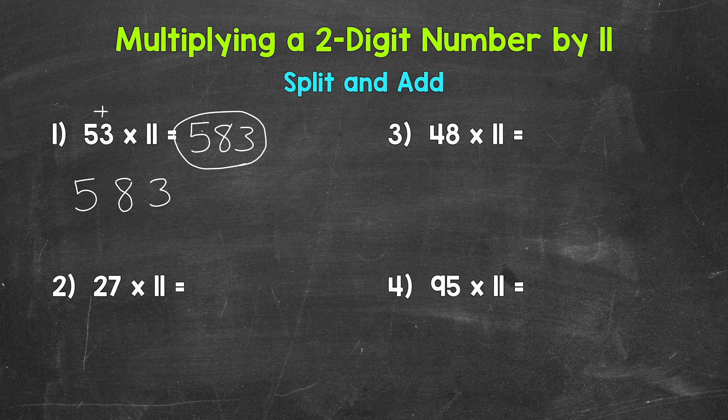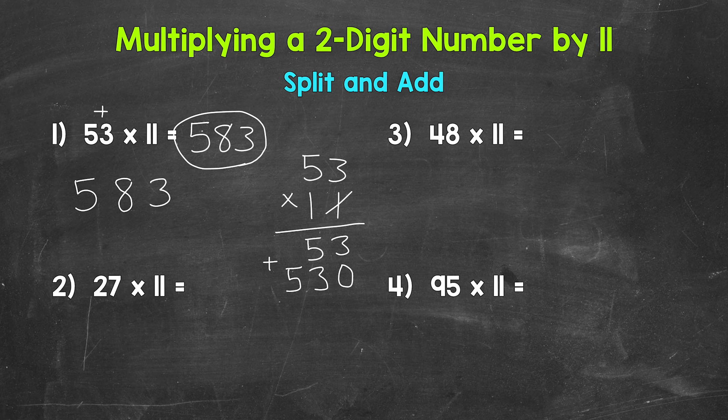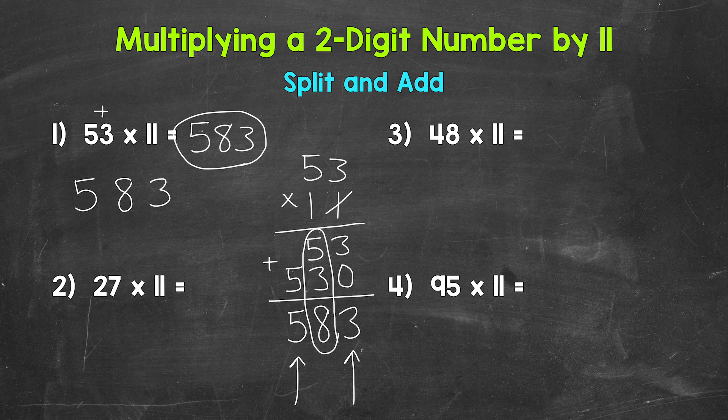Now let's take a look at how and why this works by setting up the problem this way. So let's do 53 times 11 like this. Starting with 1 times 3, which is 3. And then 1 times 5 is 5. We are done with the 1 in the ones place. So we are moving to the 1 in the tens place. So we need this 0. And now we have 1 times 3, which is 3. And then 1 times 5, which is 5. Now we add. 3 plus 0 is 3. 5 plus 3 is 8. And then we have a 5 in the hundreds place. So we can see that the 53, the digits of 53, are split. And then in the middle, we added the digits. We have 5 plus 3 equals 8. So split and add.